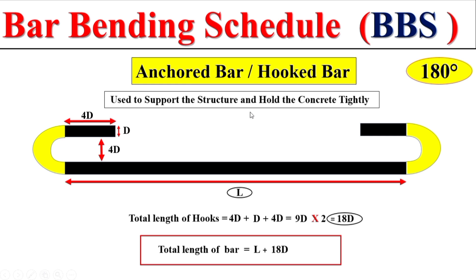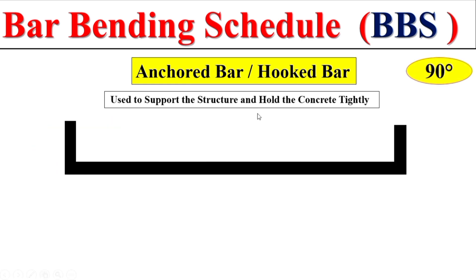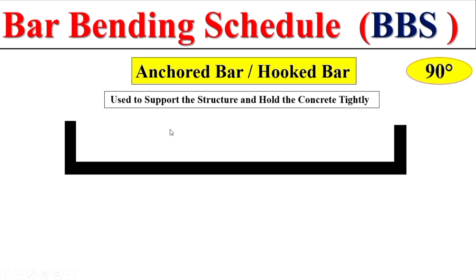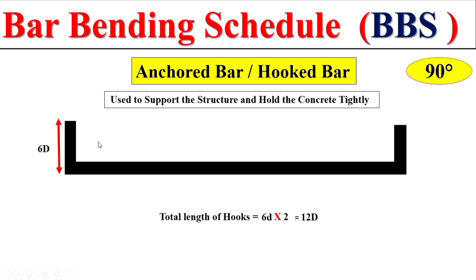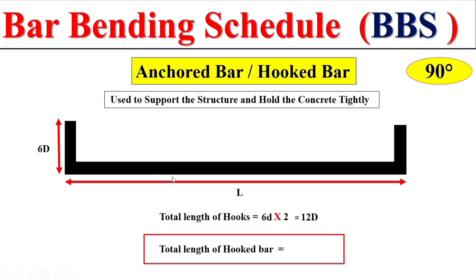The anchor bar also has another shape called the 90-degree hook. Here, the straight portion can be measured easily, but the hook on each side is taken as six times the diameter of the bar. If we multiply by 2 for both hooks, the total hook length is 12D. The total length for this anchor bar is the total clear span plus the two 90-degree hooks (12D).